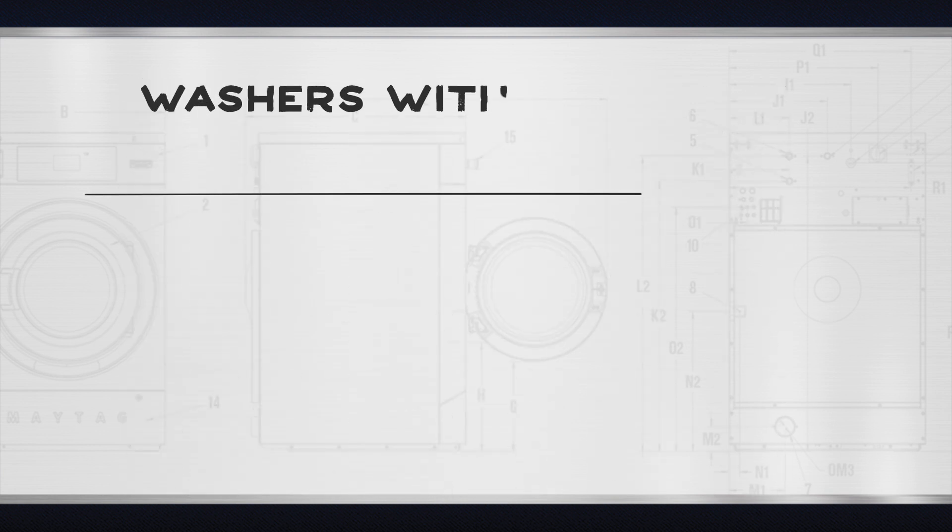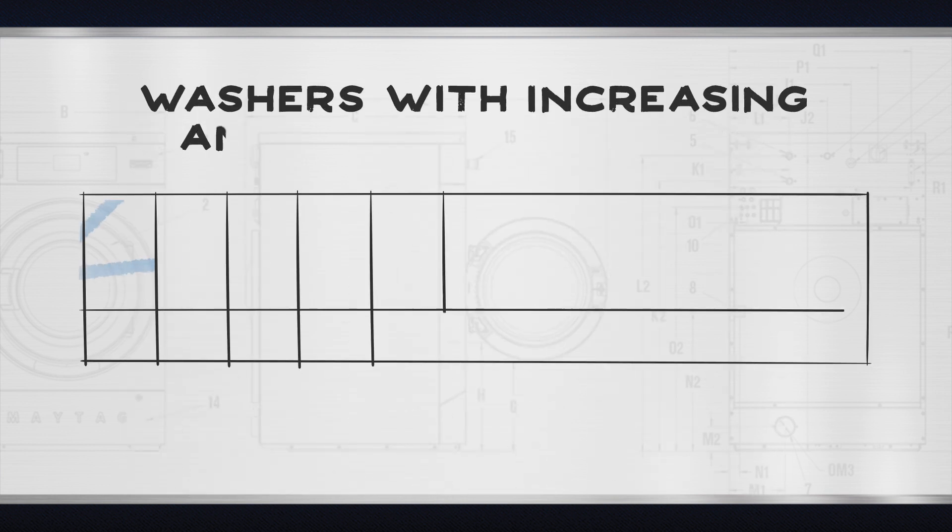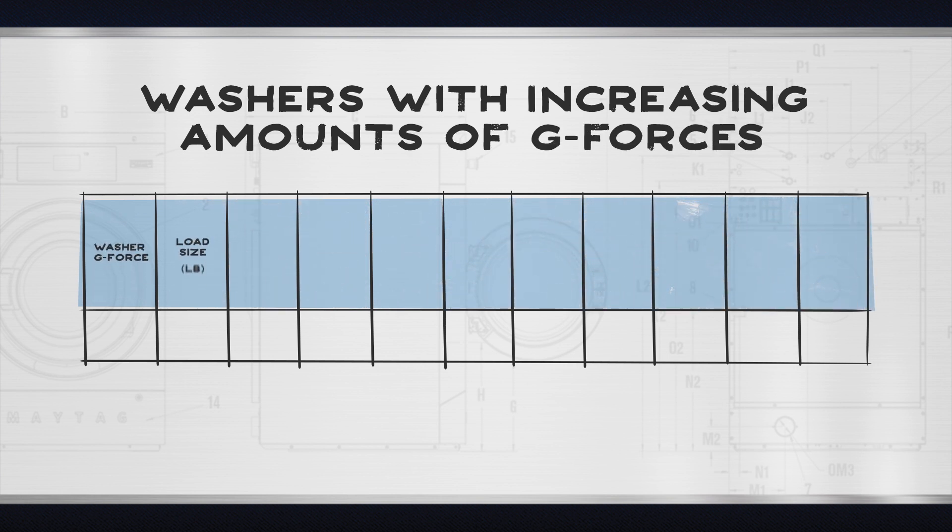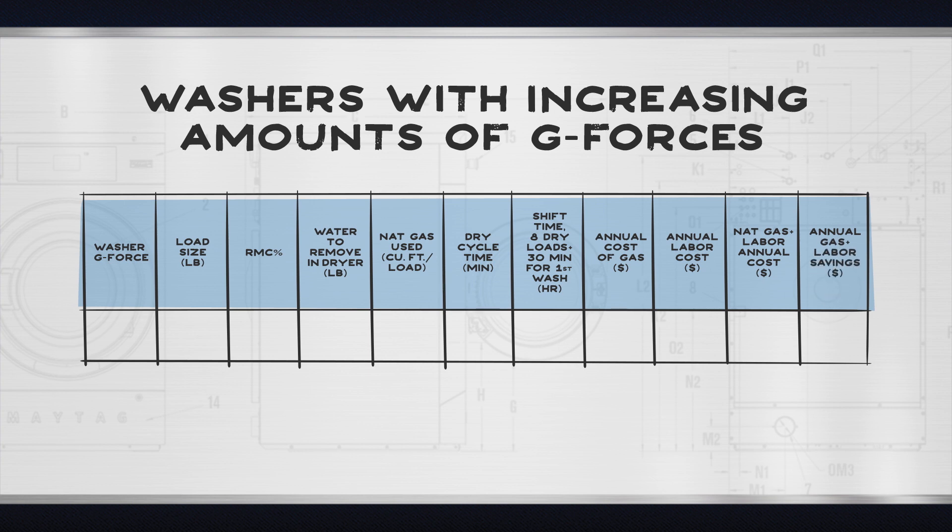Now let's make a chart to compare washers with increasing amounts of g-forces. In addition to the data we just mentioned, we'll look at how much water is left after a wash, how much natural gas it takes to dry the load, and drying and total load times.